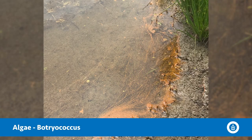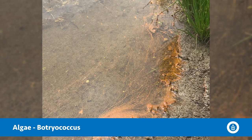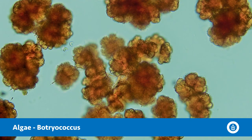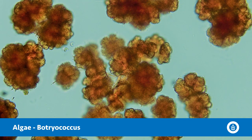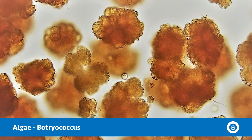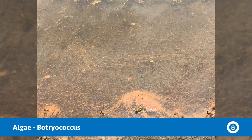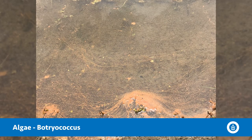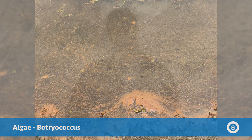One last really neat algae can actually form orange surface scums. This algae is a green algae called Botryococcus, but it stores a lot of its energy in lipids. This very high lipid content makes it less buoyant, so it pops up to the surface of the water body, producing a bright orange type of surface scum.